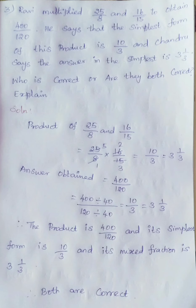Therefore, we are dividing these two numbers by 40. We get 10 by 3. Again, we are simplifying to mixed fraction, we get 3 into 1 by 3. The product is 400 divided by 120, which implies its simplest form is 10 by 3 and its mixed fraction is 3 into 1 by 3.